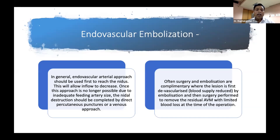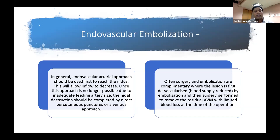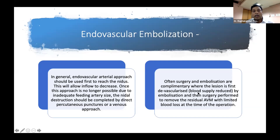In general, the endovascular arterial approach would be used first to reach the nidus. If the embolic material may not reach the nidus from the arterial side, you reduce the flow from that side, take a venous puncture, and inject embolic material from the transvenous route. It could be a combined transarterial and transvenous approach. Once both are exhausted, you can go for direct puncture of the nidus and place embolic material directly. Surgery and embolization are often complementary — lesions should be first devascularized by endovascular embolization to reduce blood loss during surgery and give surgeons greater confidence.